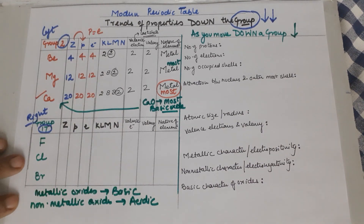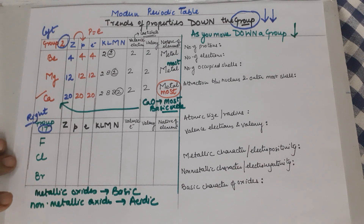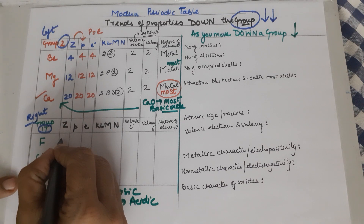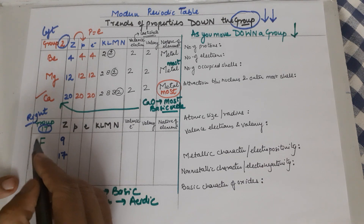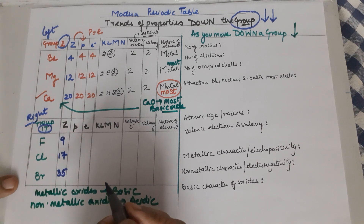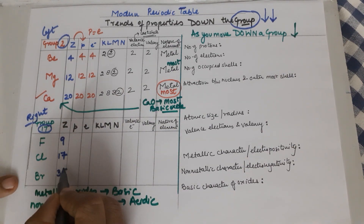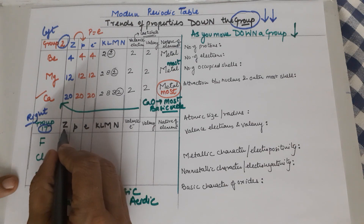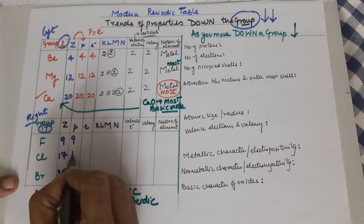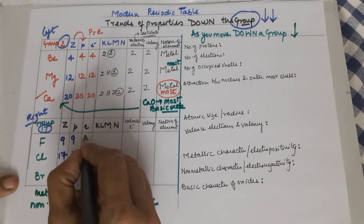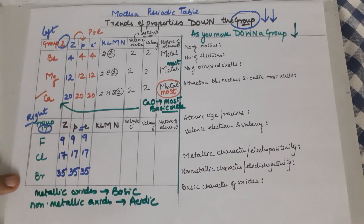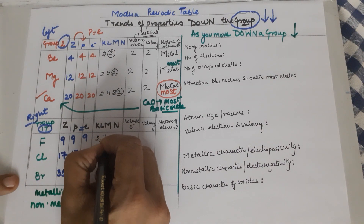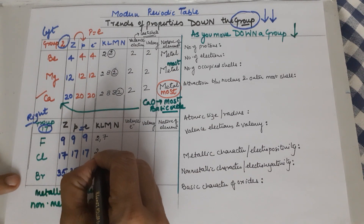Now coming to the second group I have taken — Group 17. The atomic number of fluorine is 9, chlorine is 17. I am also taking bromine as an example so you understand better, though for Class 10 you only need to learn up to atomic number 20. Bromine has atomic number 35. The number of protons is the same as the atomic number — so 9, 17, and 35. Since they are neutral, electrons equal protons: 9, 17, and 35. For electronic configuration: fluorine is 2, 7; chlorine is 2, 8, 7.